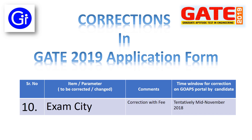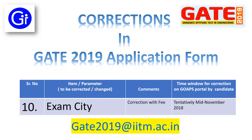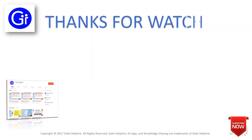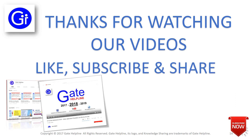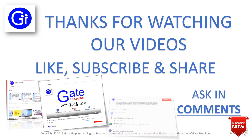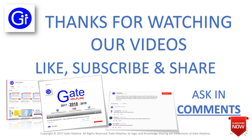So friends, these are the only 10 parameters which GATE 2019 or IIT Madras is allowing for corrections. The official PDF can be found in the description. For other parameters like correction in photo, signature, or eligibility certificate, you can mail to gate2019@iitm.ac.in. Thanks for watching our video — please like, subscribe, and share our videos to appreciate our work. If you have any doubt or question, please comment below.